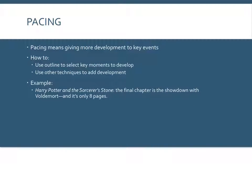Pacing is the second technique, and pacing simply means giving more development to key events. Once you've created your outline from W3A, you'd look and mark the events most crucial to your story — those would get more development. This can be a time-saving technique. Don't develop every single little piece unless your goal is to publish a novel. Make sure you develop at least the key moments. Use your outline to select those key moments, and then use other techniques to add development.